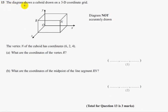Question 13. The diagram shows a cuboid drawn on a 3D coordinate grid. So your X and the Y and the Z. The vertex N, so the corner N, of the cuboid has coordinates 6, 2, 4.